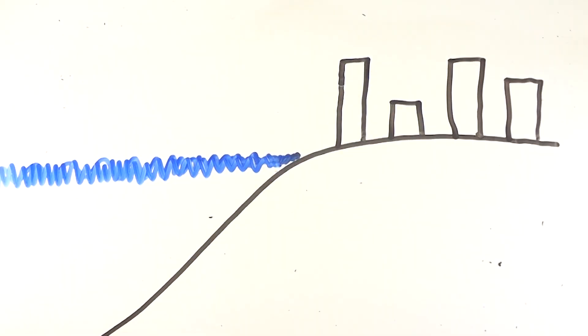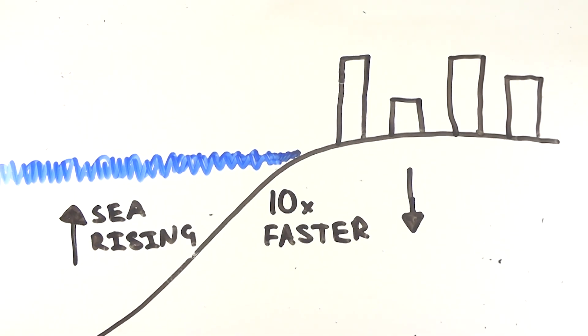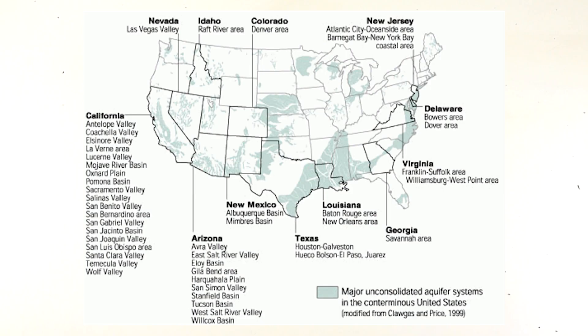In some places around the world, the ground is going down 10 times faster than water levels are rising, which is causing larger and longer floods in certain parts of the world. Just in the United States alone, 17,000 square miles across 45 states have been directly affected by land subsidence.